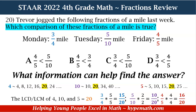The multiples of four are four, eight, twelve, sixteen, twenty, twenty-four, and so on. For ten, it's ten, twenty, thirty, forty, and so on. And for five, it is five, ten, fifteen, twenty, twenty-five, and so on. Looking at all of the multiples of the denominators four, ten, and five, we see that they all have twenty. So twenty is going to be my least common denominator — LCD or LCM. Now that we know that, we need to convert our fractions.